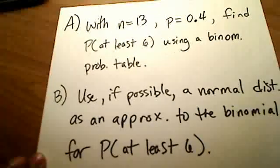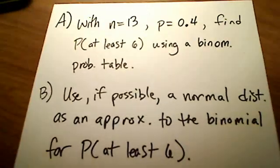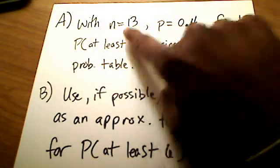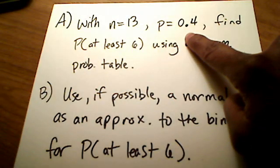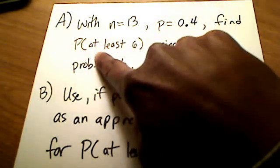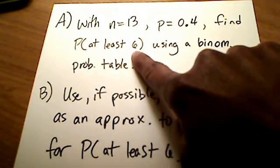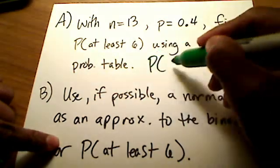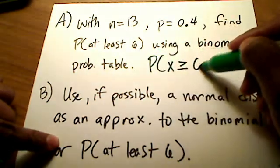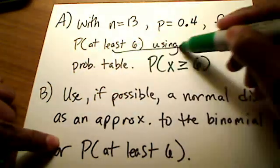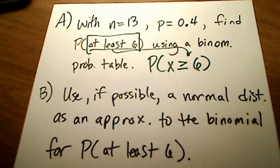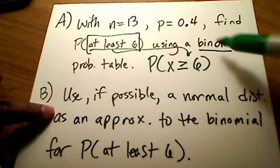Here's my second example. What if I have an n of 13 — that's the number of independent trials — and a probability of success of 0.4? They want us to find the probability of at least 6. At least 6 means the probability that x is greater than or equal to 6, because the phrase 'at least 6' includes the number 6. They want me to look this up using the table.